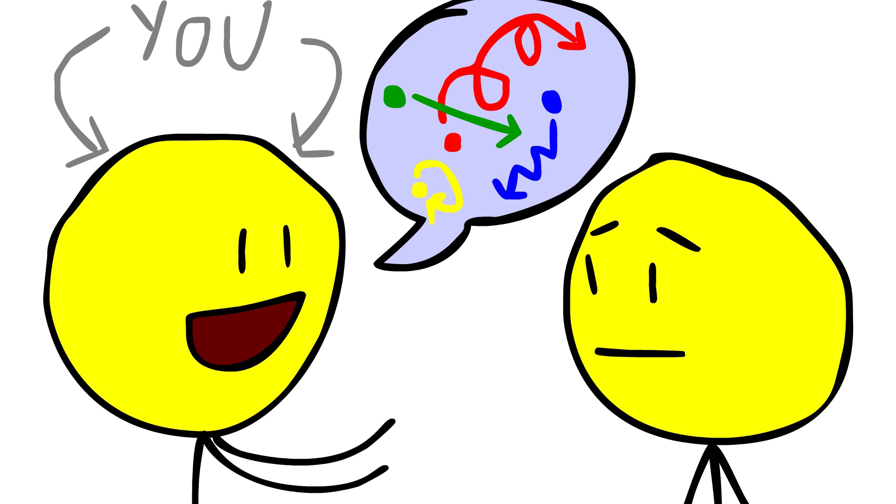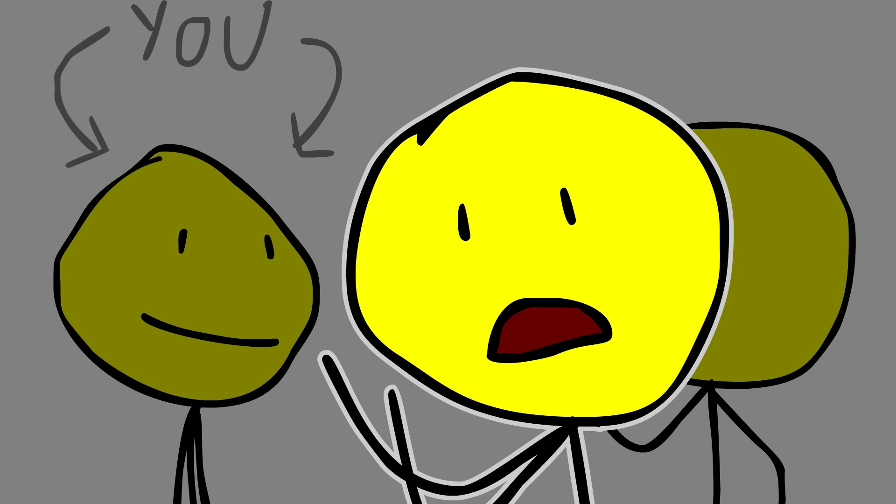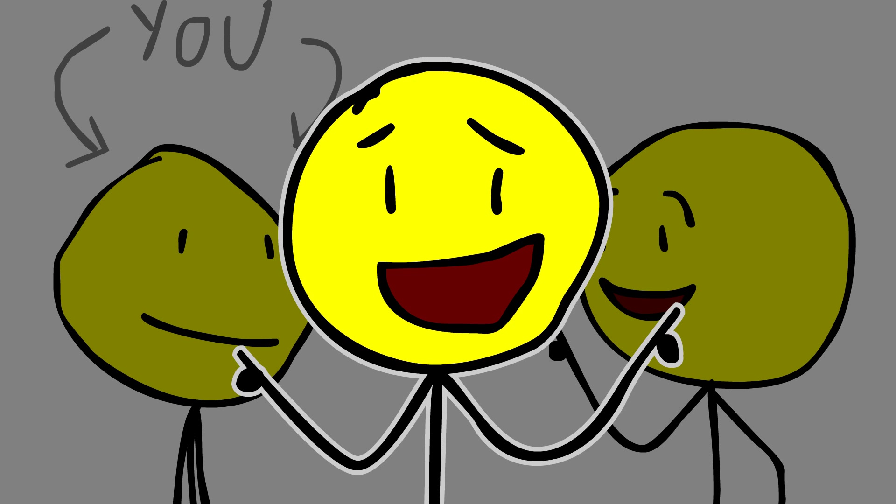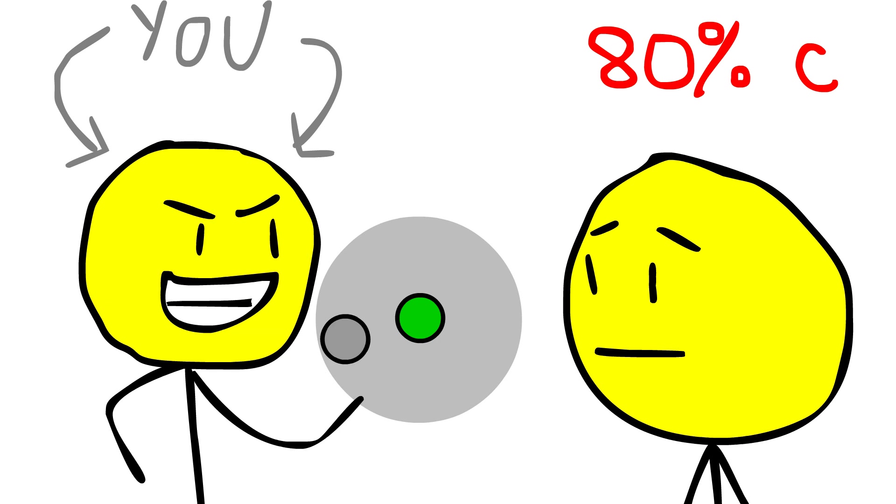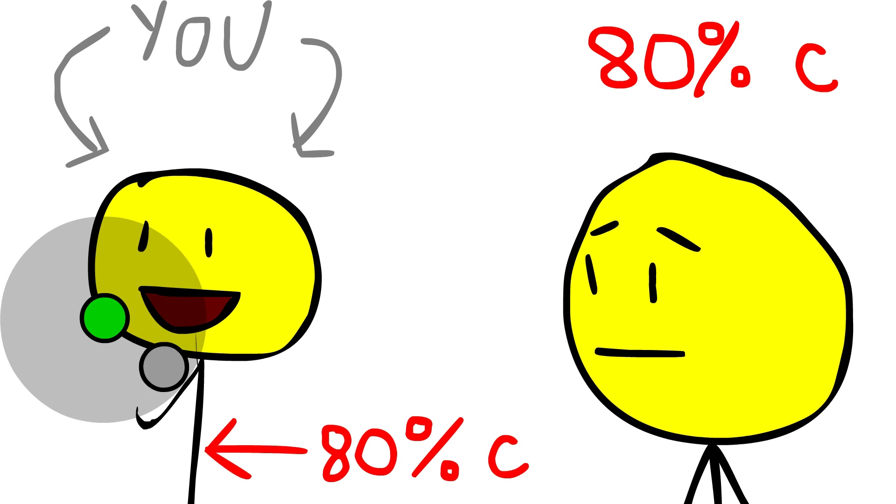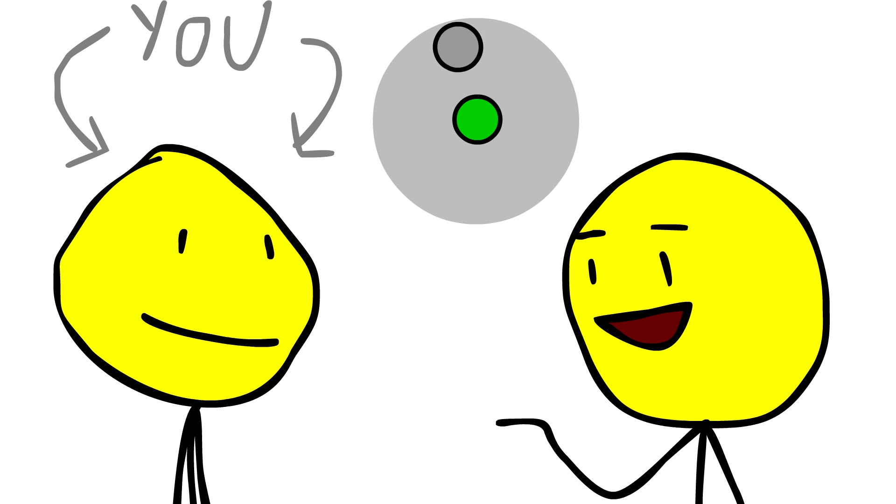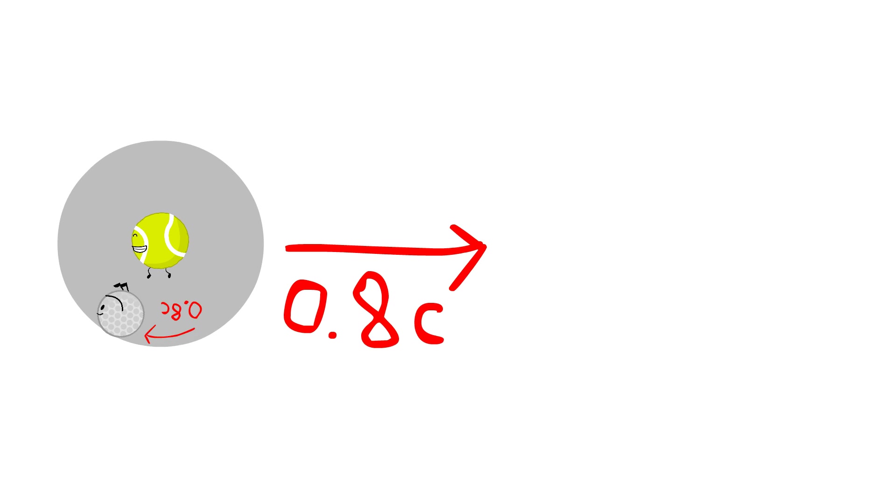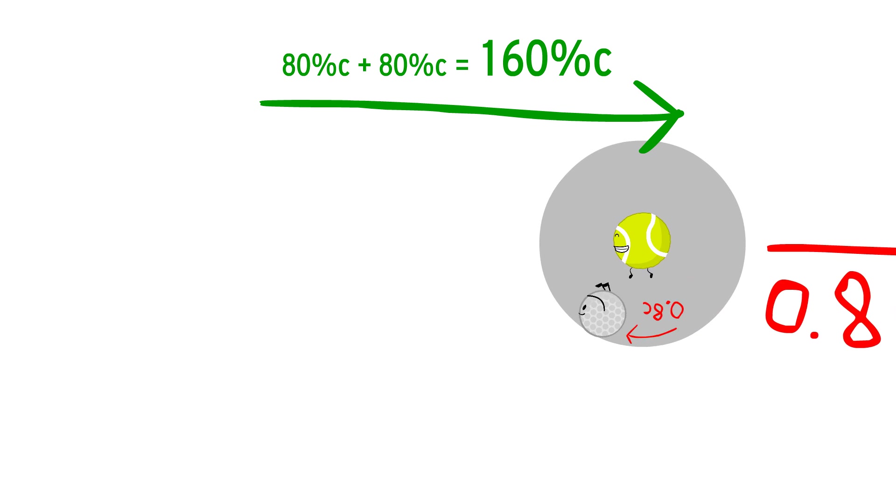you said we could have any configuration of motions and they still wouldn't pass the speed of light. That's right. By the way, your voice is higher pitched now so you can tell us apart. But what if one object is orbiting another at 80% the speed of light, and then we grab the whole system and move it in one direction at another 80% the speed of light?